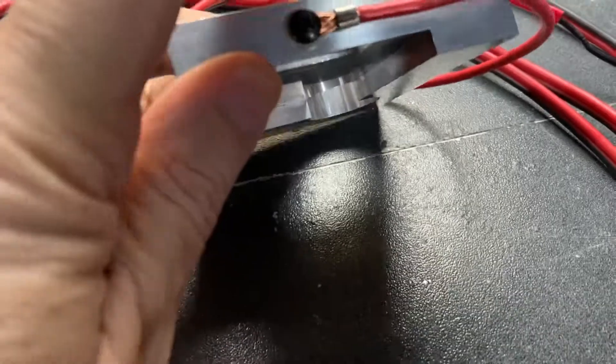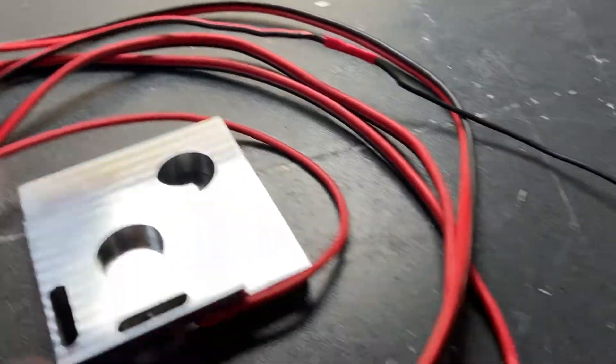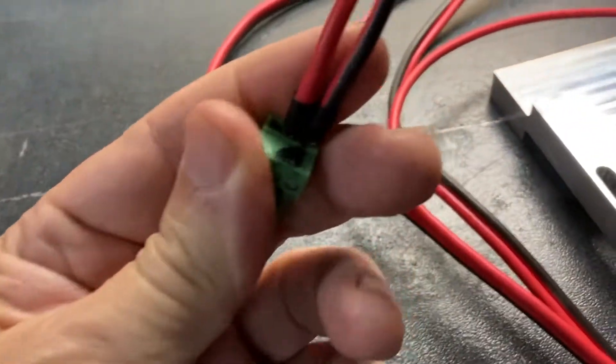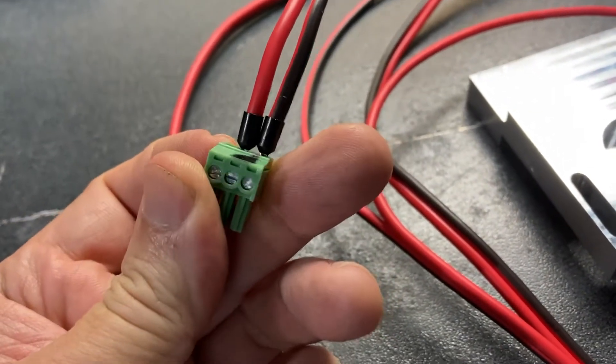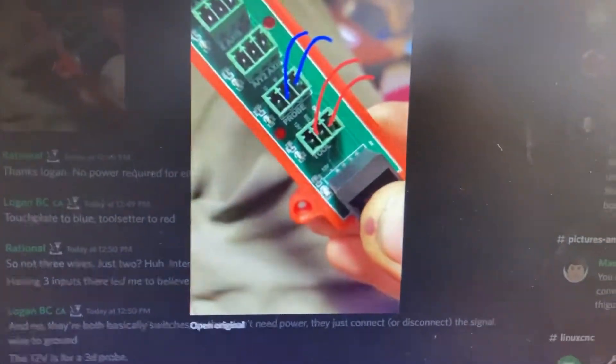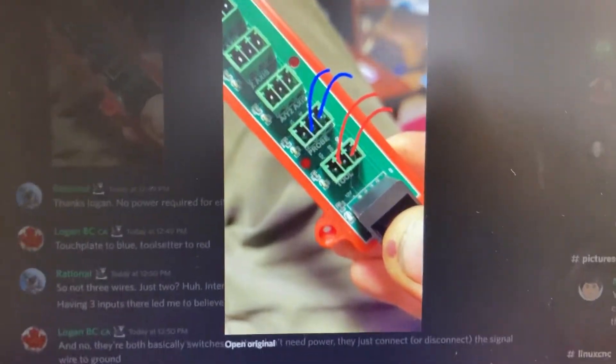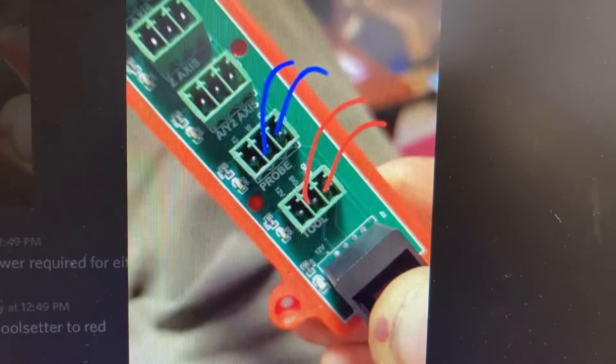What I've done is I've screwed one wire in that goes to the center terminal. When you look at the HAL 2K breakout board, you've basically got probe and tool.